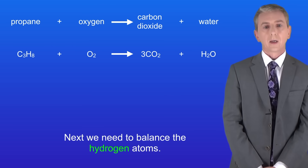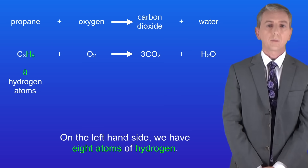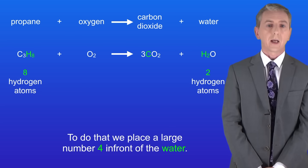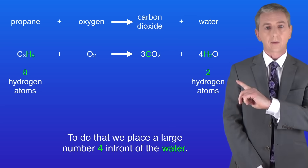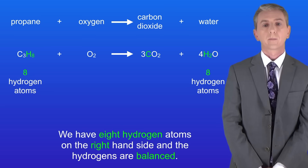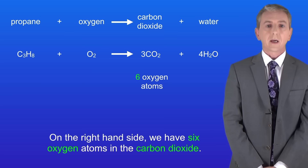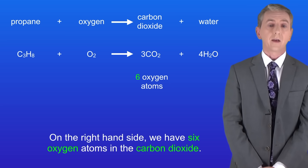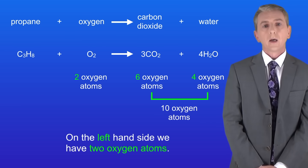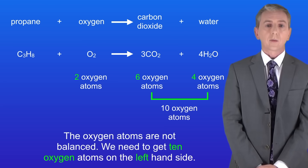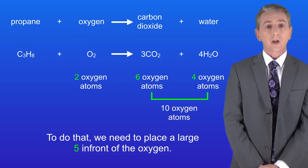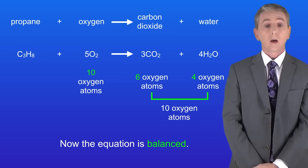Next we need to balance the hydrogen atoms. On the left hand side we've got eight atoms of hydrogen but on the right hand side we've only got two atoms of hydrogen. So we need to get eight hydrogen atoms on the right hand side and to do that we place a large number four in front of the water. Now we have eight hydrogen atoms on the right hand side and the hydrogens are balanced. Finally we need to balance the oxygen atoms. On the right hand side we have six oxygen atoms in the carbon dioxide and four oxygen atoms in the water, giving a total of ten oxygen atoms. On the left hand side we've got two oxygen atoms so the oxygen atoms are not balanced. We need to place a large five in front of the oxygen. And now the equation is balanced.